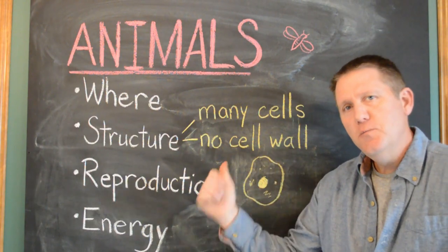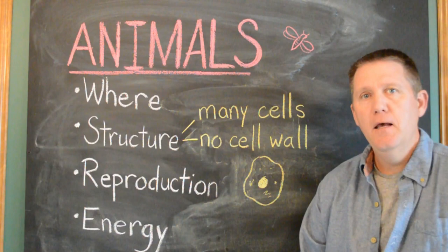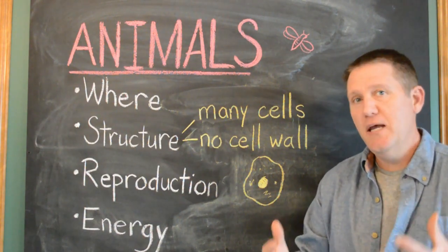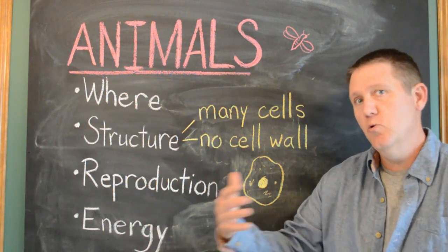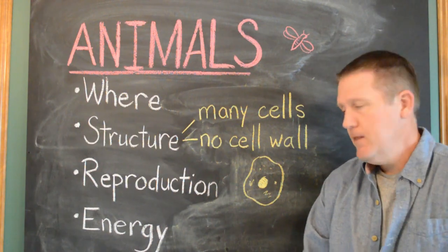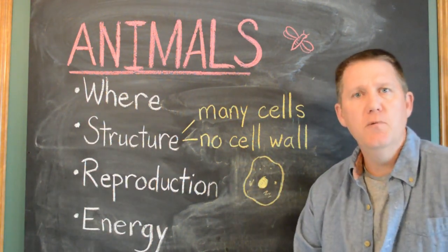One of the odd things about the animal kingdom is none of the cells have cell walls. Animals stand up and protect themselves with a skeleton, whether that's an external or an internal one like we have. But our cells themselves don't have a cell wall, so they kind of have a rounder appearance most of the time.